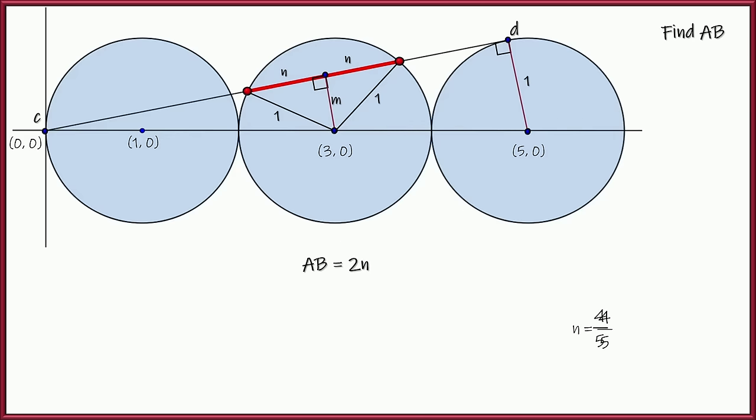So AB is double that. Double of four-fifths is eight-fifths. So our answer, A to B, that's eight-fifths. That's pretty cool, right?